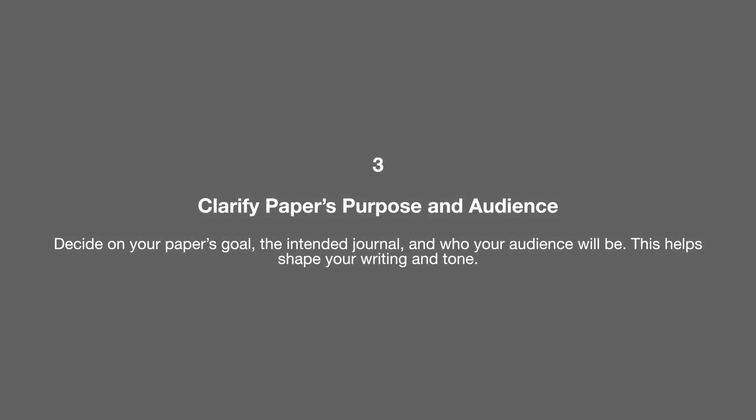The third step is to clarify the paper's purpose and aims. Decide on what the goals are for your paper, the journals you're going to submit it to, and who your audience is going to be. This will help when you come to write and also ensure that your tone and approach is appropriate for who you are writing for.